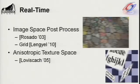Two more techniques: image space post-process, which samples velocities in a velocity buffer; and anisotropic texture space, which samples along velocities within texture sampling. We use a combination of these techniques.